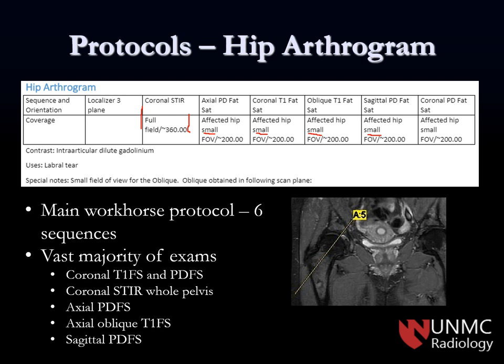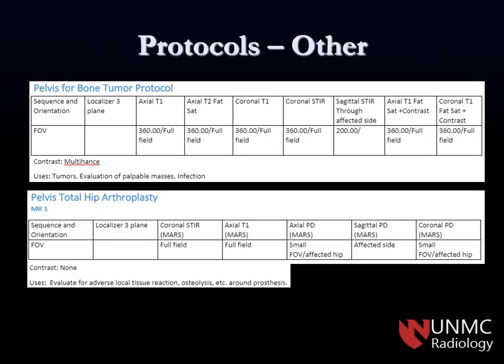One important sequence from the hip arthrogram is the axial oblique, taken through the plane of the femoral neck. Think of it as scrolling up and down through the femoral neck - this is a very helpful sequence to look at cartilage and labrum. We do hip arthrograms most days in the bone room.